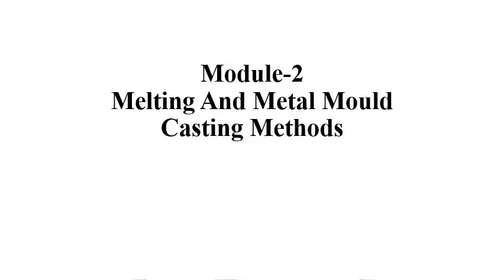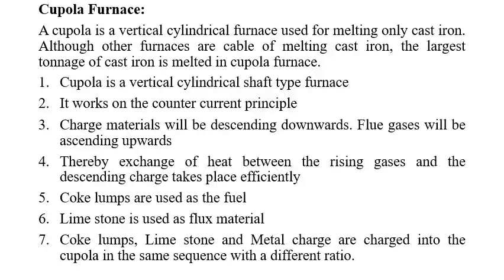In this session, different types of melting furnaces used in the foundry are discussed. The first important furnace is called the cupola furnace. The cupola furnace is used for melting only cast iron. The position of the cupola is vertical, and this type of furnace handles the largest tonnage of cast iron melted.